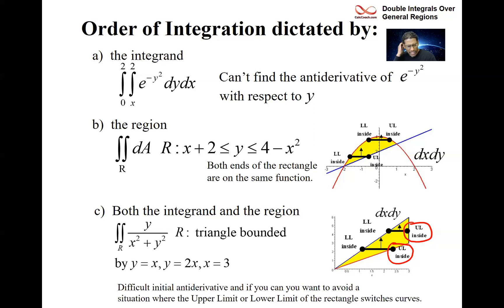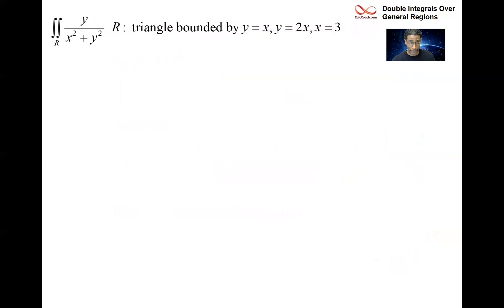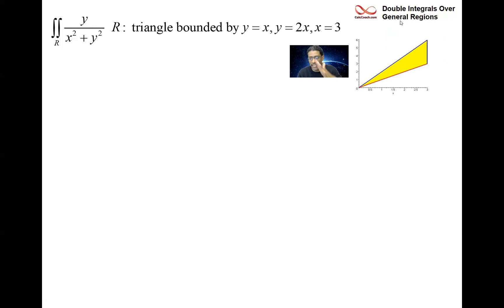Difficult initial antiderivative, and you want to avoid if you can having to do multiple double integrals where the upper or lower limit switches curves on you, causing you to do more than one double integral. We have our graph: y equals 2x, y equals x, x equals 3, and we've explained the issue with dx dy, so now let's switch.